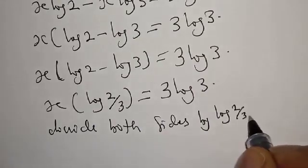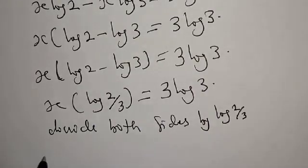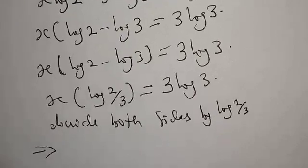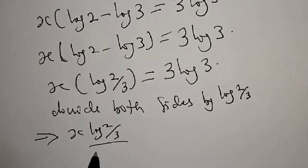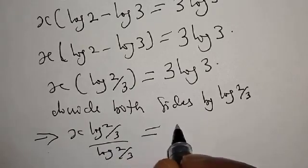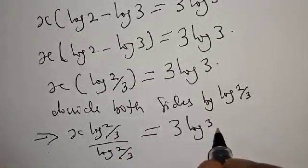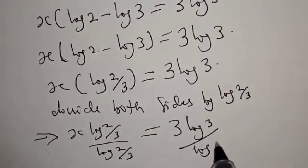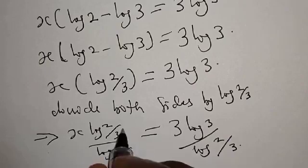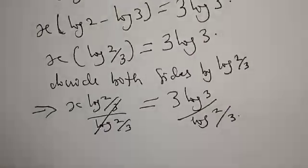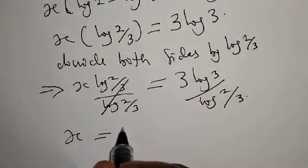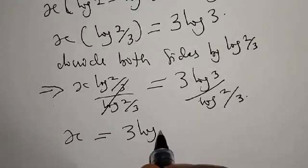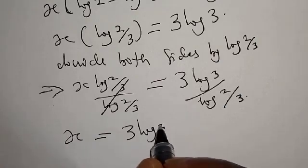This implies that x log 2 over 3 over log 2 over 3 equals 3 log 3 over log 2 over 3. This one will cancel, so x equals 3 log 3 over log 2 over 3.